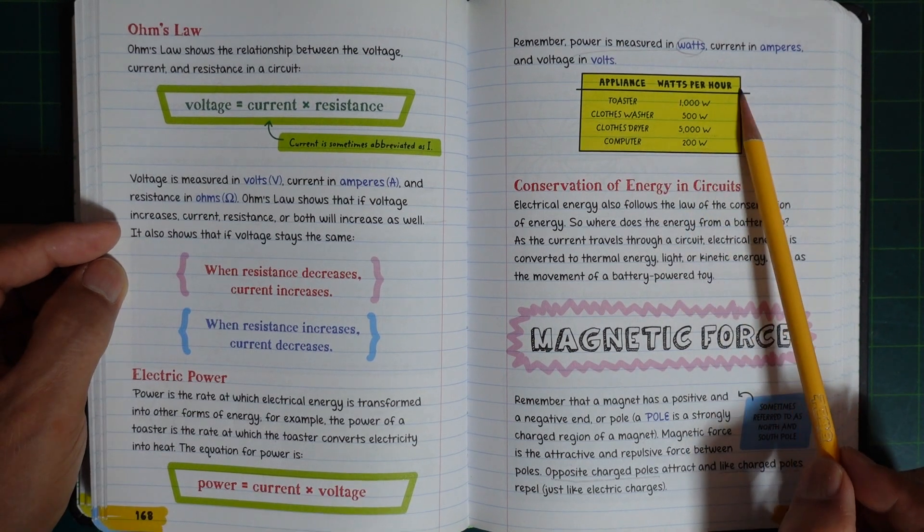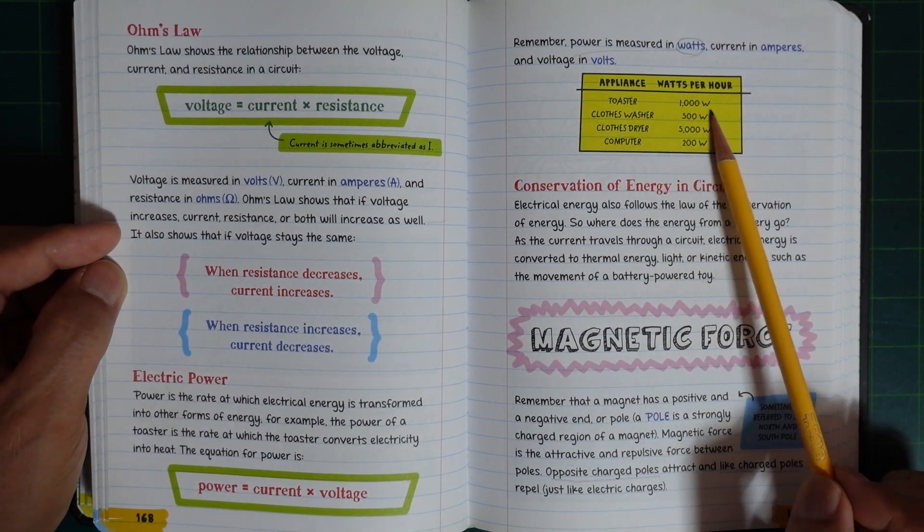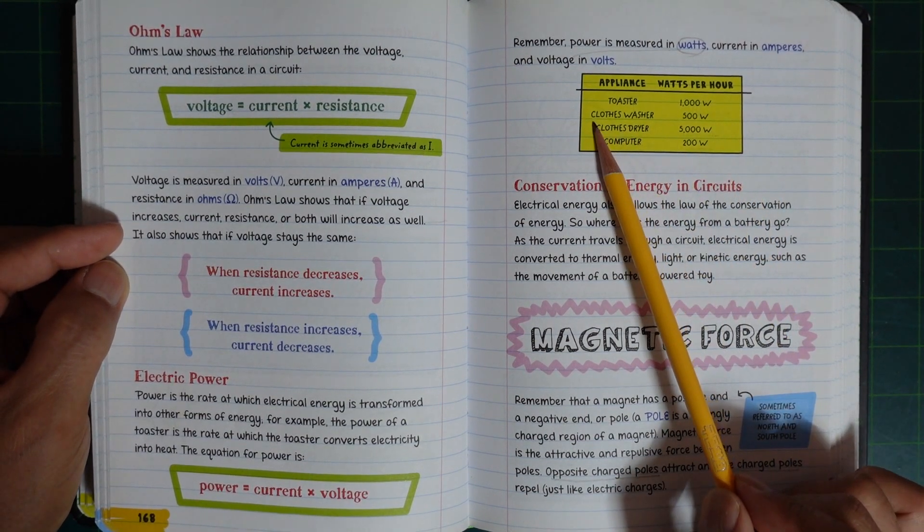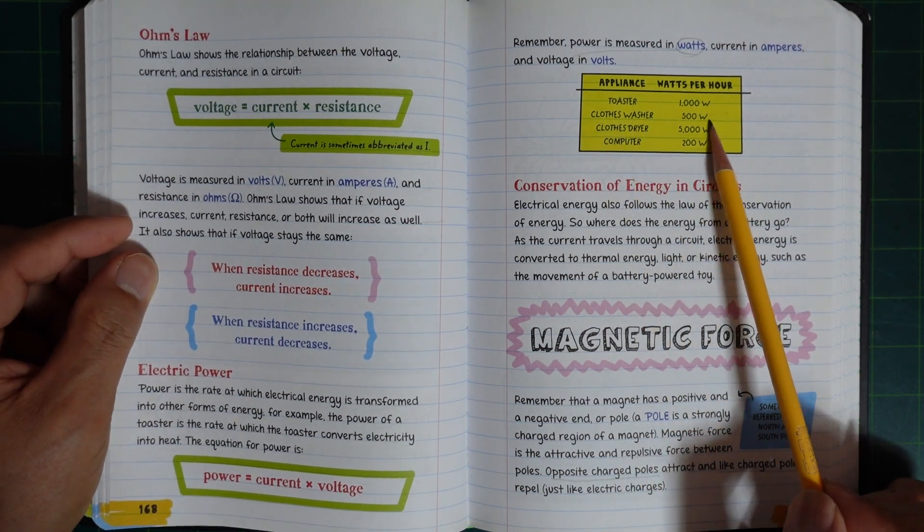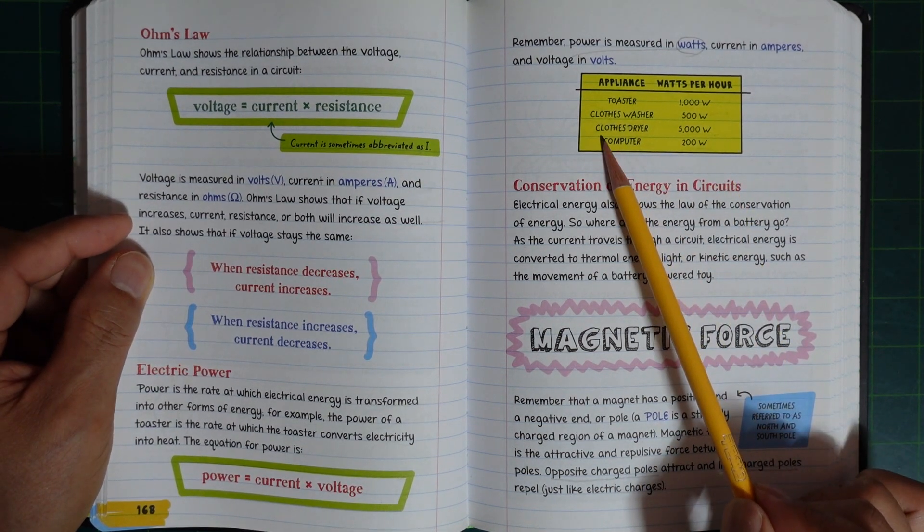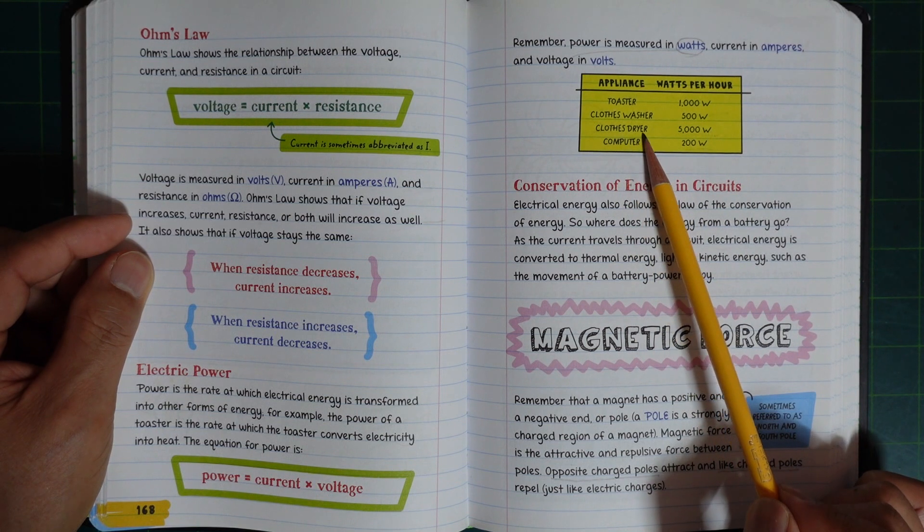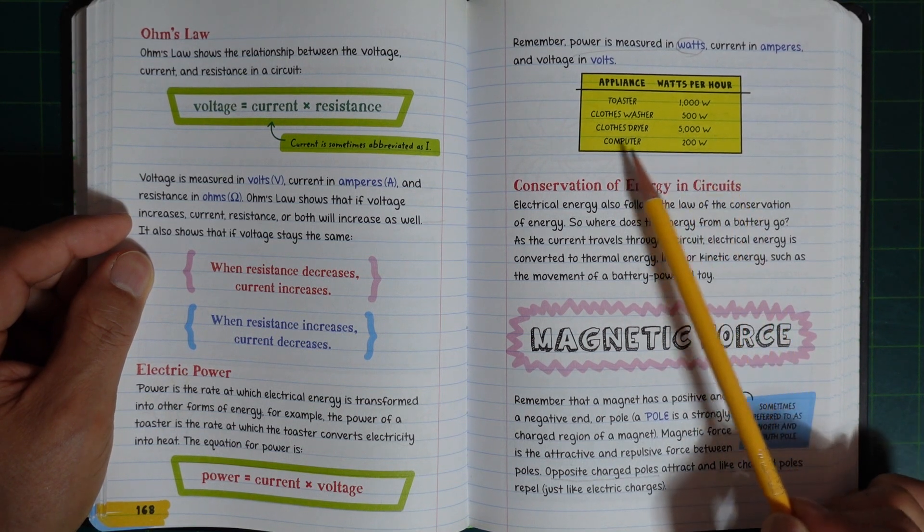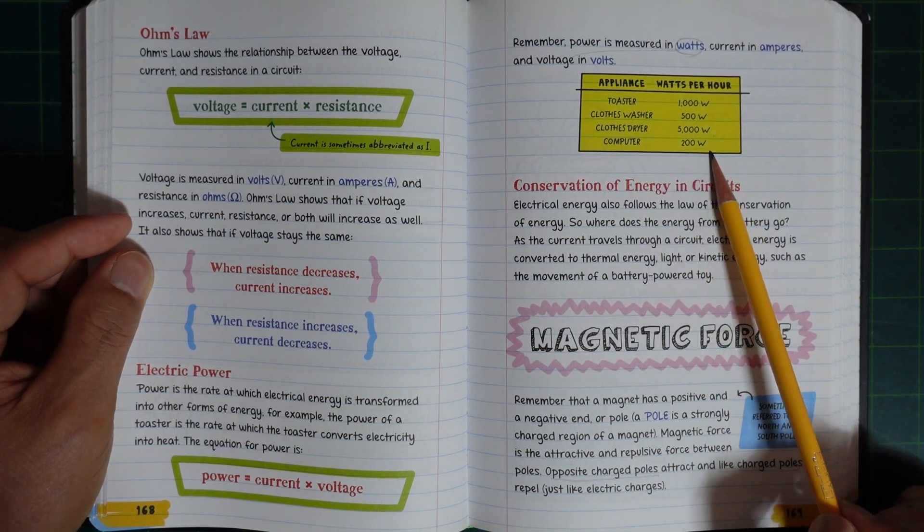Appliance watts per hour: toaster, 1000 watts; clothes washer, 500 watts; clothes dryer, 5000 watts; computer, 200 watts.